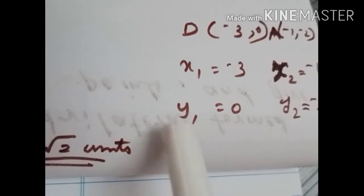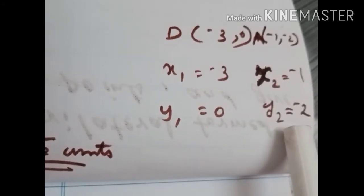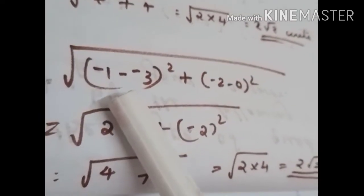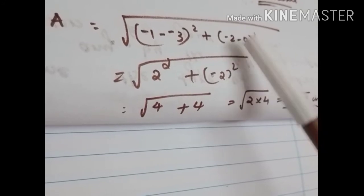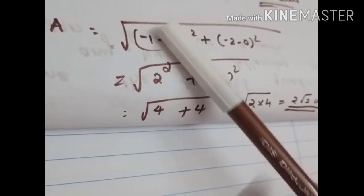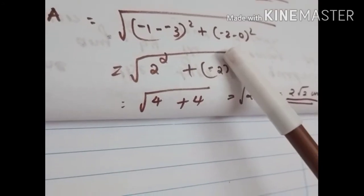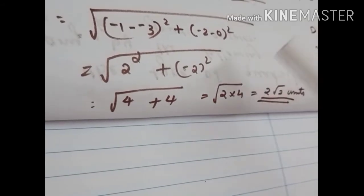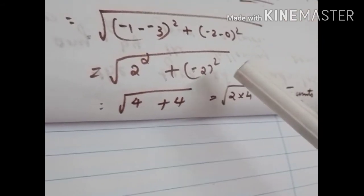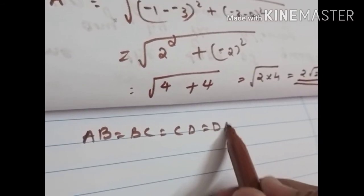Now we find DA, considering points D and A: x1 = -3, y1 = 0, x2 = -1, y2 = -2. Substituting: root of (-1 minus -3) squared plus (-2 minus 0) squared = root of 2 squared plus 2 squared = root of 4 plus 4 = 2 root 2 units. So DA = 2 root 2 units. All four sides AB, BC, CD, DA are equal.